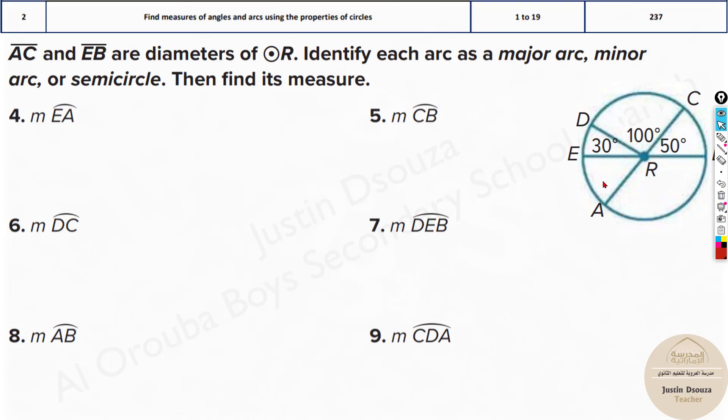Moving on to the next type of problems. Here we have been given a circle with many angles and we need to find the measure of arcs and tell whether they are major or minor arc. Now EA, this is a minor arc because it's less than 180 degrees. But here it's not just finding that, you need to even find the angle.